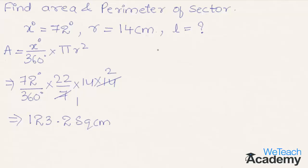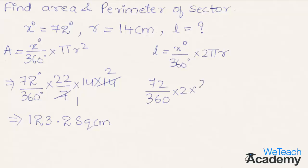Now let us find the length of the arc. Length of arc equals x degrees divided by 360 degrees into 2 pi R. Substituting x equals 72 and R equals 14: 72 divided by 360 into 2 into 22 by 7 into 14. Simplifying, we get 17.6 centimeters as the length of arc.